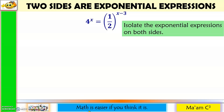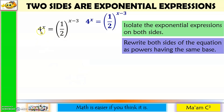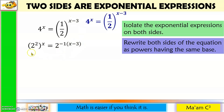Let's have one more. Step 1: the expressions are already isolated. Step 2: make our bases the same. For 4, I'm going to make this as 2 squared. So 2 squared and then copy x. For 1 half, remember that the exponent of 2 is positive 1. If I move my denominator up, the positive 1 exponent will become negative 1. So it will be 2 raised to negative 1, then copy x minus 3. Now I have the same base. Simplifying: 2 times x is 2x, so 2 raised to 2x. For the other side, negative 1 times x is negative x, and negative 1 times negative 3 is positive 3. So I have 2 raised to negative x plus 3.